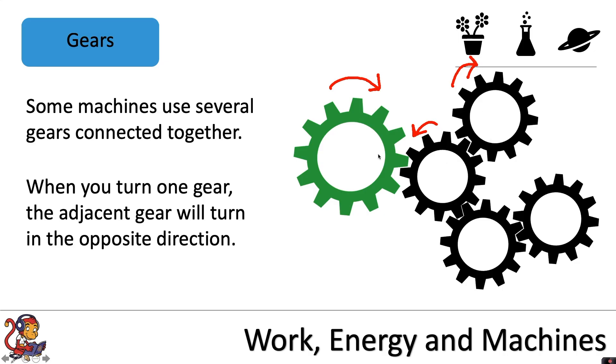So some more complex machines might use a combination of different gears to change the force applied, the speed, or the direction of another moving part.